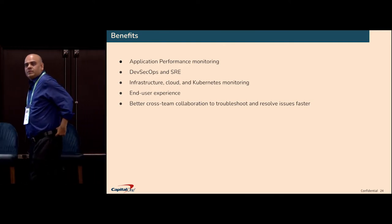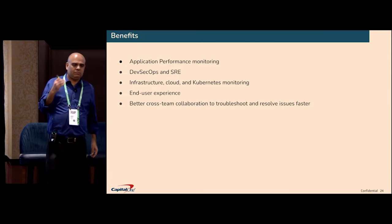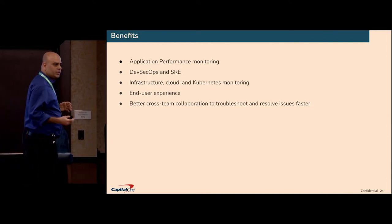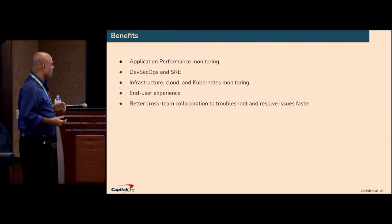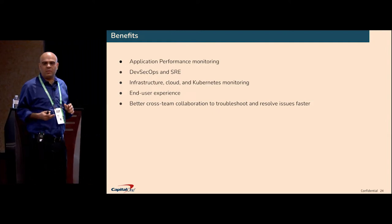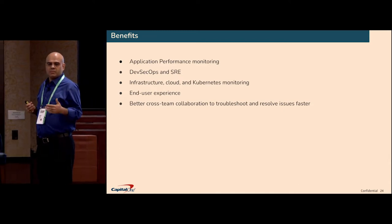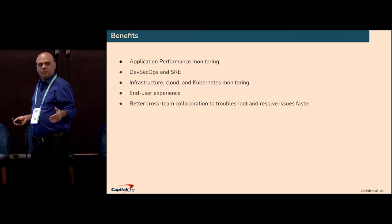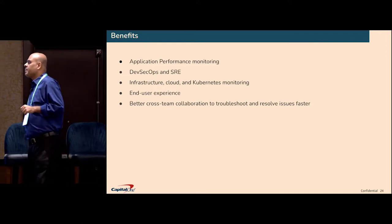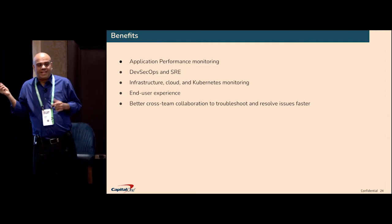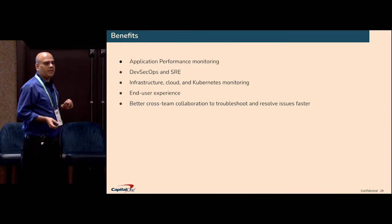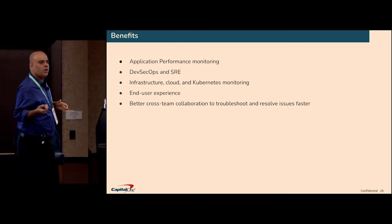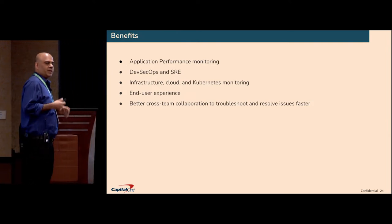Some benefits of observability and application performance monitoring: a full end-to-end observable solution makes developers' lives easier — they can pinpoint, detect, and resolve issues much faster. SRE and DevOps teams can use it to make systems more secure and resilient. Infrastructure and ops teams can increase uptime, improve performance, and reduce time to pinpoint issues. Most importantly, you can resolve issues before they impact end users, keeping customers happy. And teams can collaborate and resolve issues faster together.